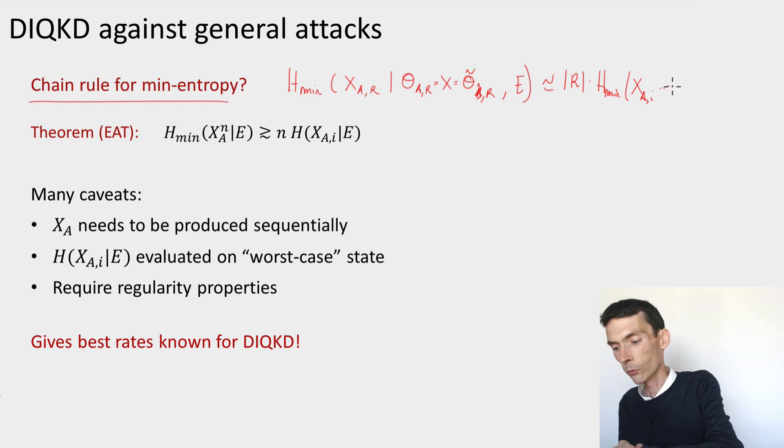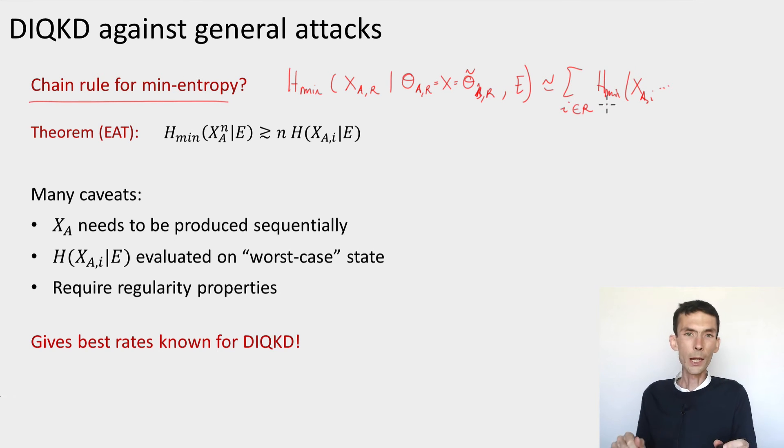X_A for any one i, or equivalently that it would be equal to the sum over i in R. Maybe this is a better way to say it, so the summation over i in R in these entropies. That would be additivity. This, I told you, doesn't hold.